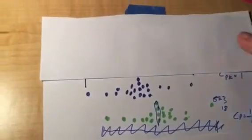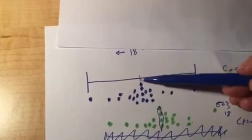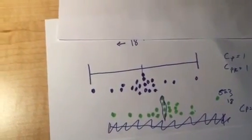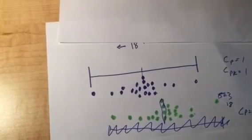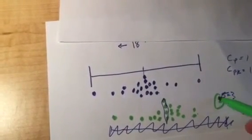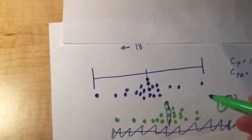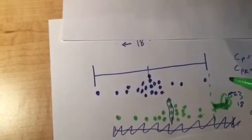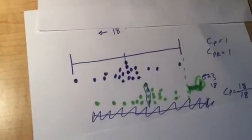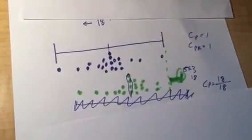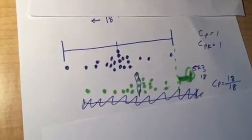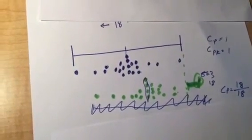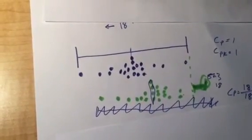But what we haven't taken into account is the fact that this blue kicker's average kick is right in the middle of the goal post, and this green kicker's kick is kind of off to the right. So like this kick here is going to be outside the goal post. Any output over here in this range is going to be outside the goal post. So that's a problem, but that problem doesn't manifest itself if we just look at the ratio of the width of the goal post to 6 standard deviations of the process. And that's really why we have C sub PK.